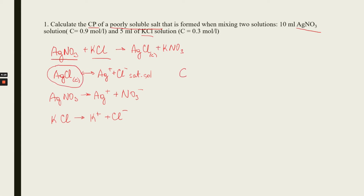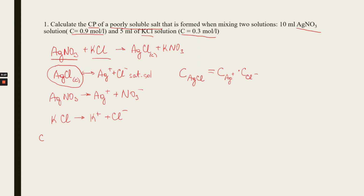We write dissociation for soluble electrolytes, and we have to calculate the concentration product for the poorly soluble salt. The concentration product for silver chloride is the concentration of silver multiplied by the concentration of chloride. We can assume that since the salt is fully dissociated, the concentration of silver will equal the concentration of silver nitrate. Before mixing, we had some concentrations as given.